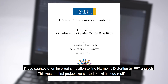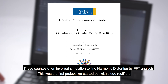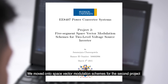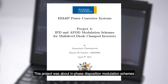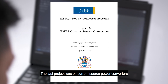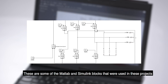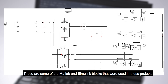These courses often involved simulation to find harmonic distortion by FFT analysis. The first project started with simulating diode rectifiers. Later we moved into space vector modulation schemes. The third project was about simulation of inverters. The fourth project was about in-phase disposition of modulation schemes. And the last project was on current source converters. These are some of the MATLAB and Simulink blocks I completed for the assignments.